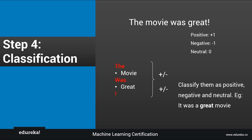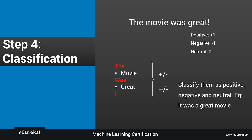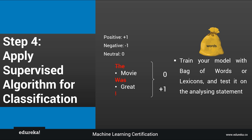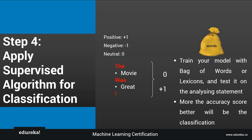Step four is the classification step. Now that we are left with just two words, the task is to classify them as positive, negative, or neutral. For a positive word we give a sentiment score of plus one, for a negative word minus one, and for neutral we give zero. This is the part where machine learning comes in. You can model your data with bag of words, or you can use lexicons — which are nothing but a dictionary of pre-classified words. Once the model is trained, you can test on the analysis statement, and higher accuracy means better classification. The sentiment score of 'movie' is zero as it's a neutral word, and 'great' is plus one — it's a positive word.